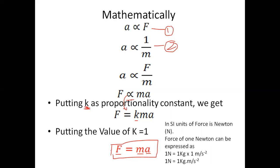In SI units, the unit of force is the Newton, represented by N. The force of one Newton can be expressed as one Newton equals one kilogram multiplied by one meter per second squared. So one Newton equals one kilogram times meter per second squared.